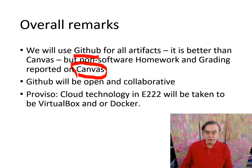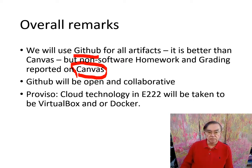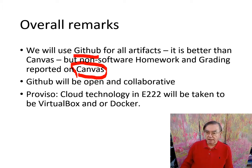It's not surprising GitHub is better than Canvas. GitHub is designed by the professional software community to store software and software-related artifacts like documentation. A course like this is full of software and software-related documentation. GitHub is collaborative, it is open, and it has features like using Markdown as the text language — but you'll be able to deal with that.